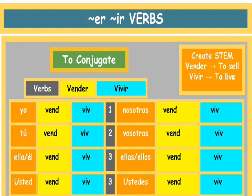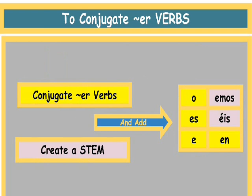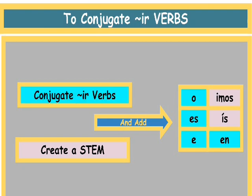So let's take a quick example conjugating vender and vivir, which are an ER and an IR verb. Vender means to sell, vivir means to live. We create the stem by taking out the ER or the IR, and then we put the same endings inside the boot. The only difference would be outside the boot. To conjugate an ER verb, you create a stem and add O, ES, E, and EN inside the boot, and EMOS and EIS outside the boot. And it's the same thing for IR — you do the same endings inside the boot: O, ES, E, EN, and IMOS and IS for outside the boot.